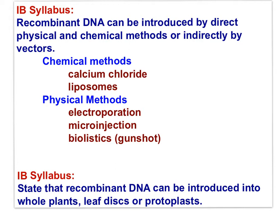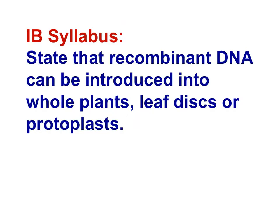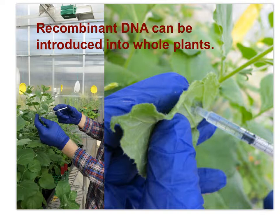Following an introduction to bioinformatics, let's briefly revisit the methods by which foreign DNA is introduced to new species. This covered the indirect introduction of recombinant DNA using vectors. Now let's look at this IB syllabus statement: state that recombinant DNA can be introduced into whole plants, leaf discs, or protoplasts.